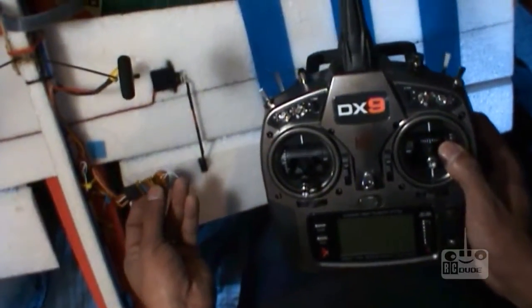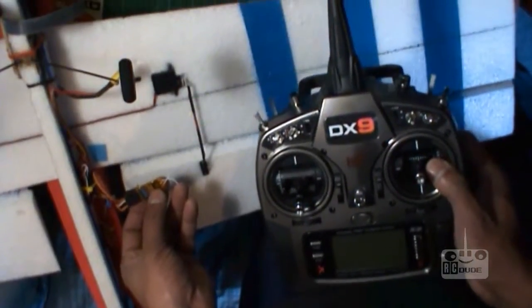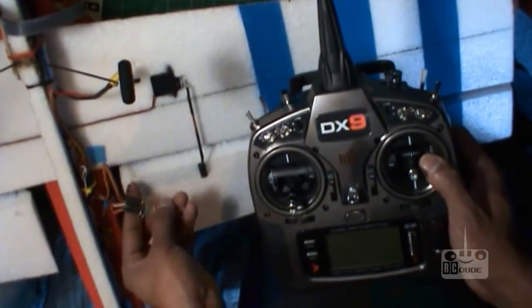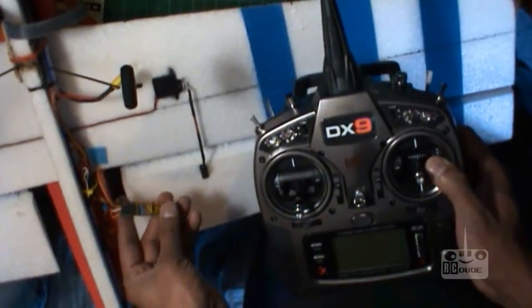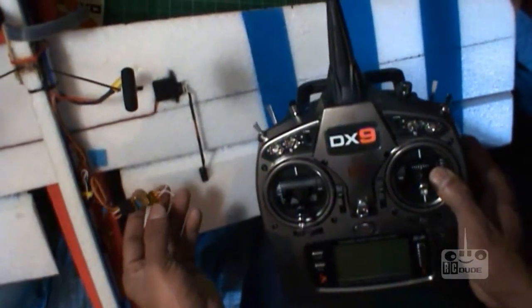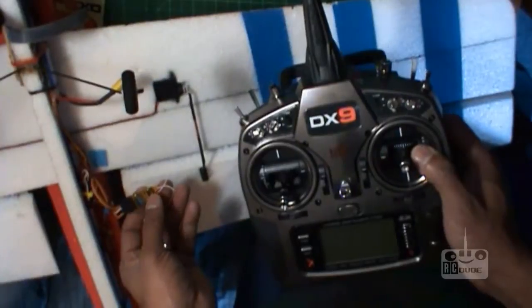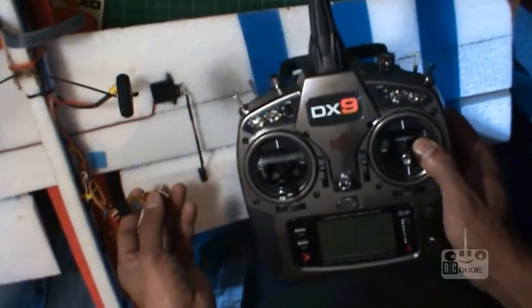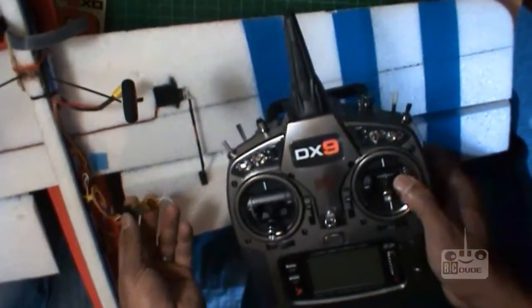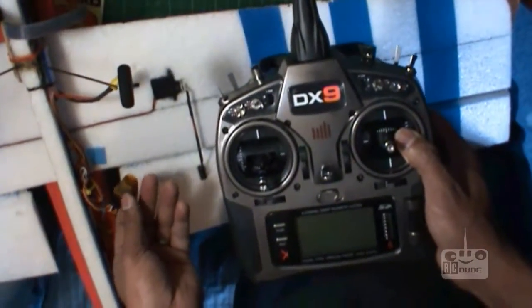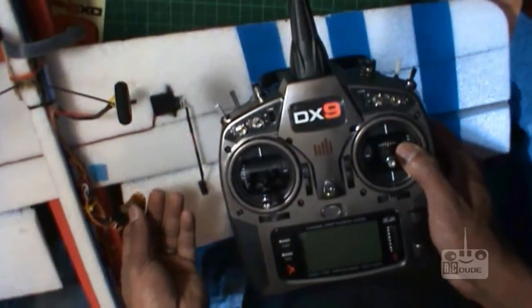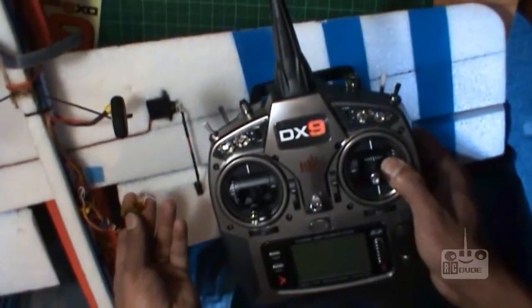And it also works with six channels, any channel with the yellow one. It even works with DSM2. All your old receivers will work with this. When you buy the DX9, it has all the backwards compatibility, so you don't get any confused.